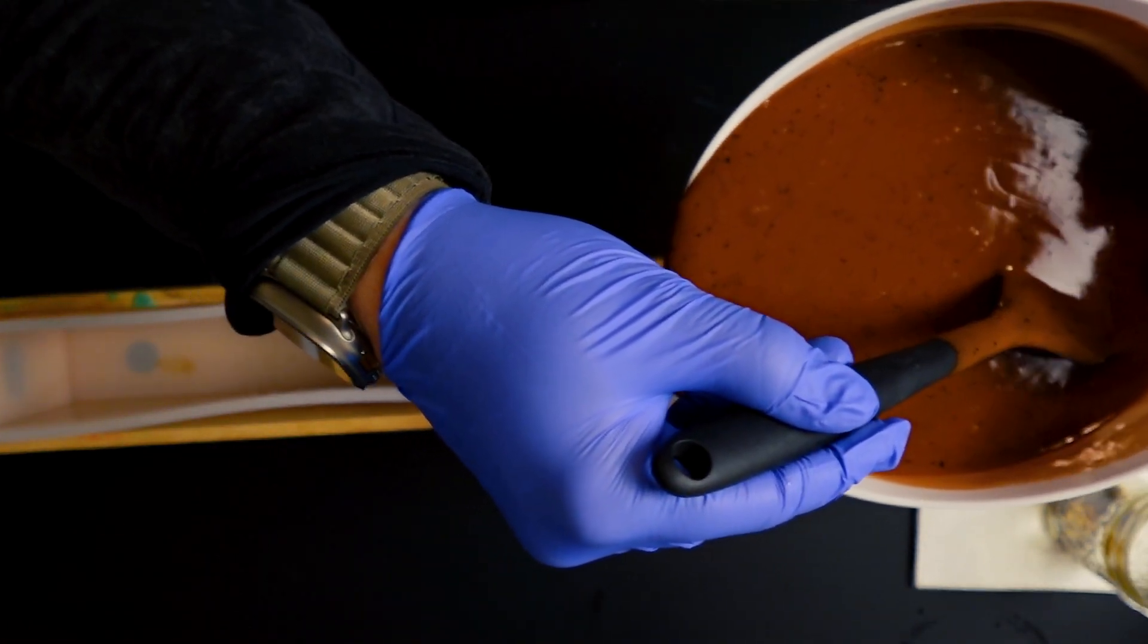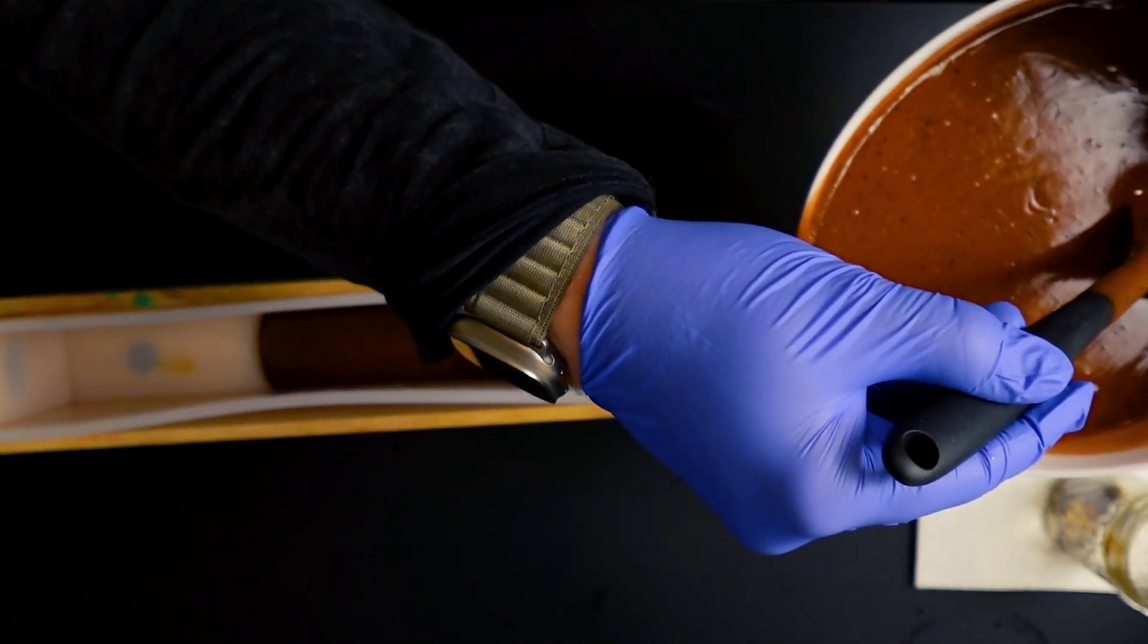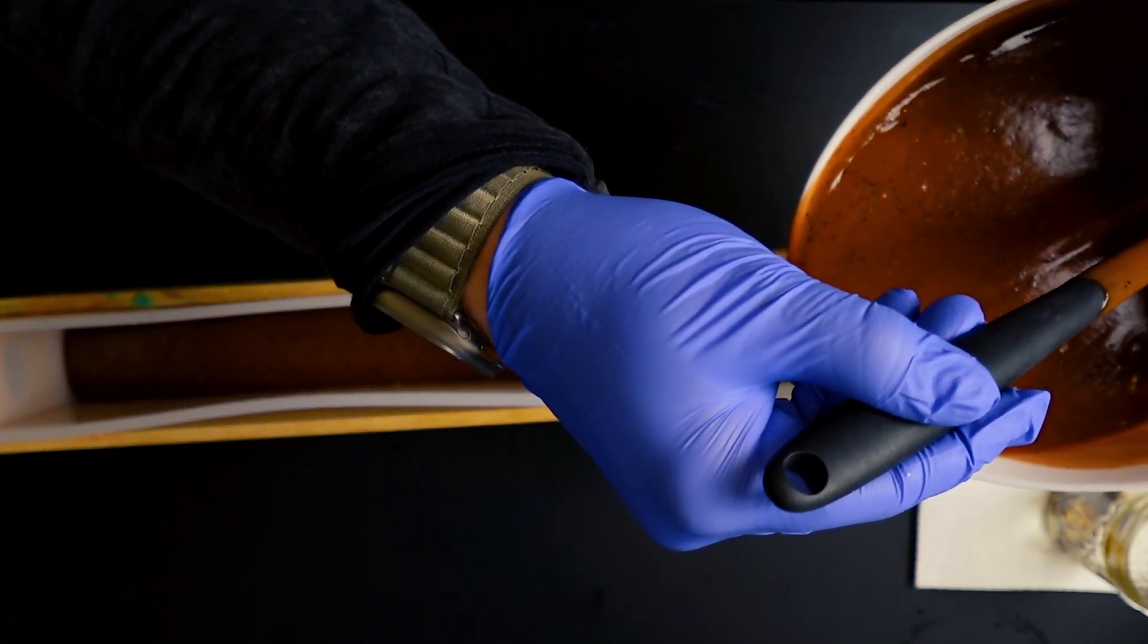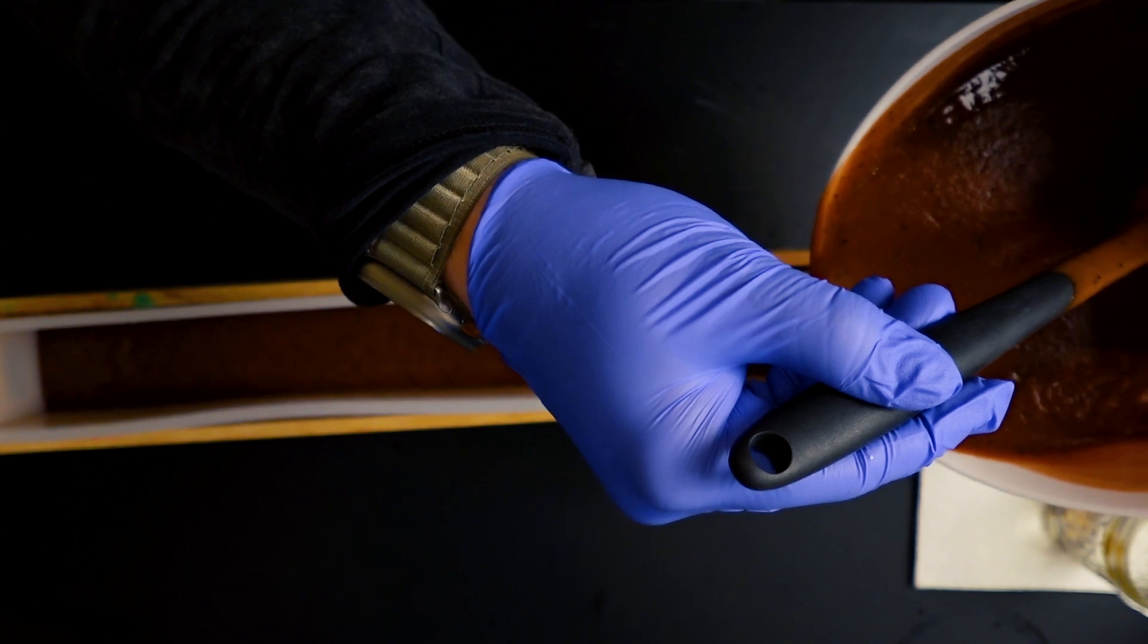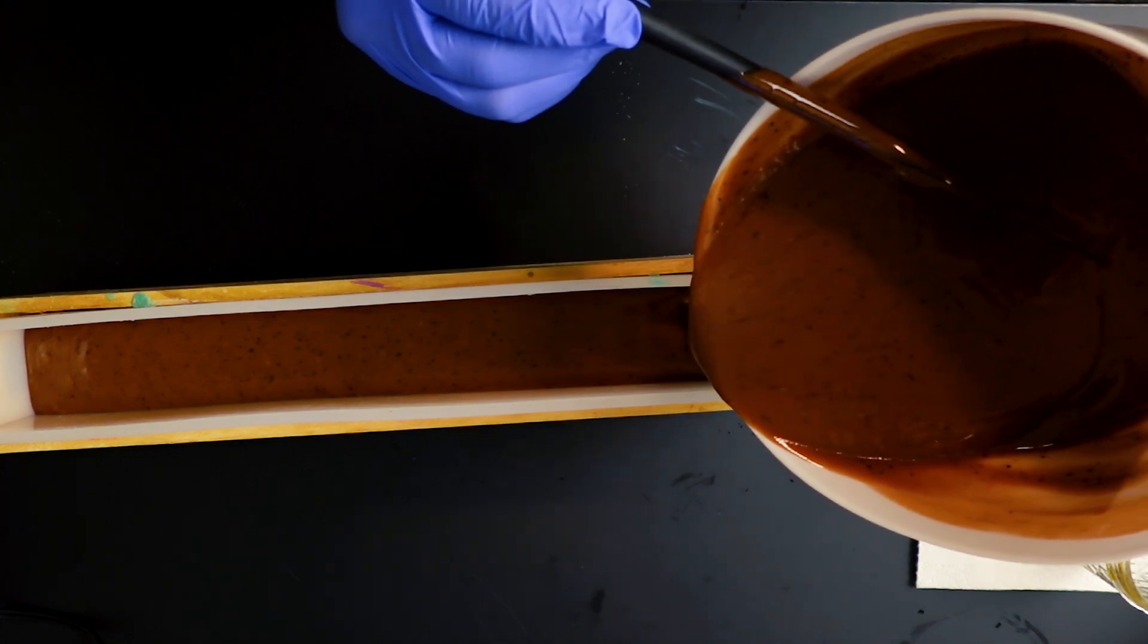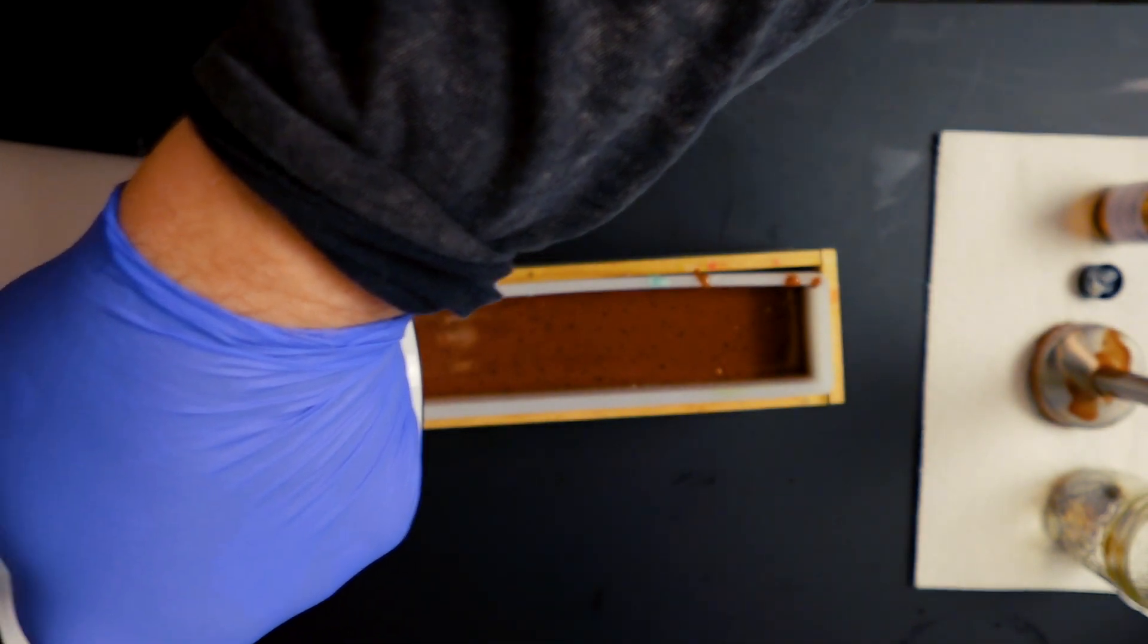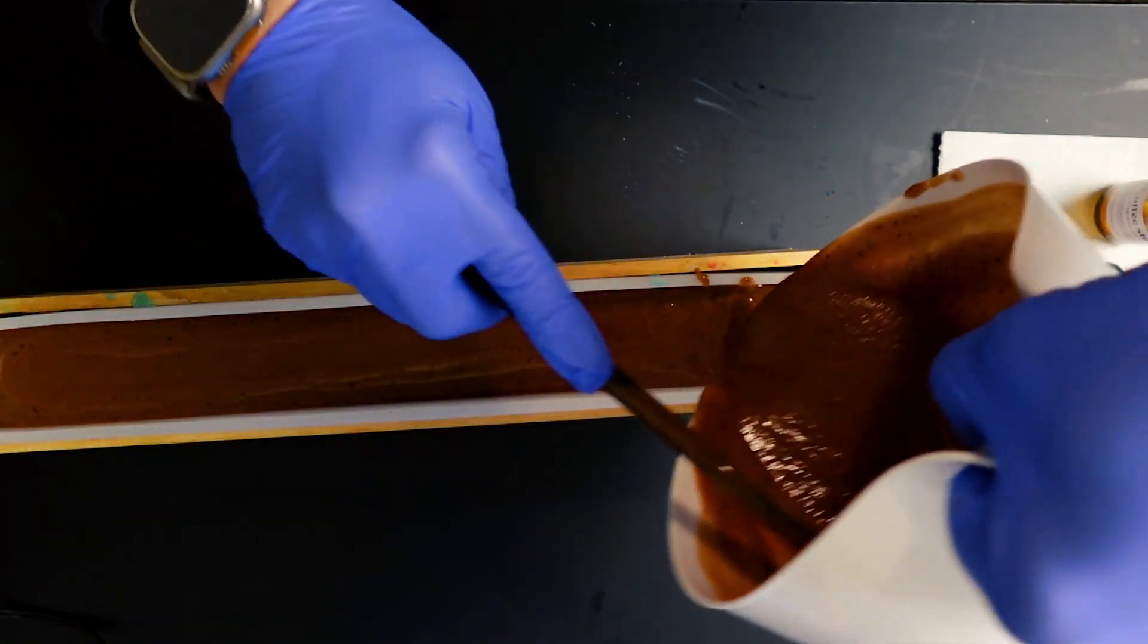All right, so now we're going to pour this into our loaf mold. It is starting to accelerate just a little bit, nothing that we're not going to be able to handle because we're not doing anything fancy with this. You can see all of those coffee grounds are just beautifully suspended into this soap batter. With each cut you're going to get a really nice payoff of the scrub from the coffee grounds.